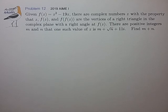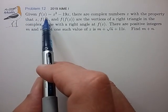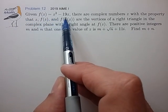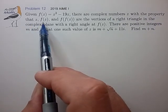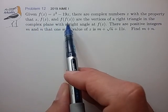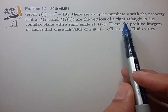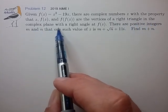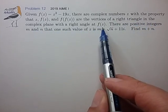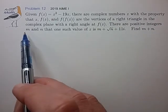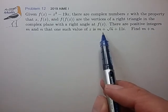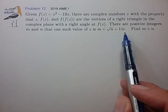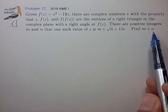Hi, and finally, here's a challenging complex number problem for my recent AIME. Given f(z) = z² - 19z, there are complex numbers z with the property that z, f(z), and f(f(z)) are the vertices of a right triangle in the complex plane with a right angle at f(z). There are positive integers m and n such that one such value of z is m plus root(n) plus 11i. Find the sum m plus n.